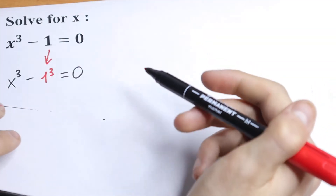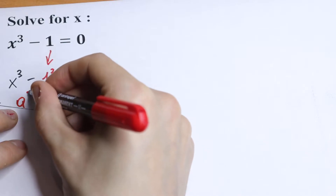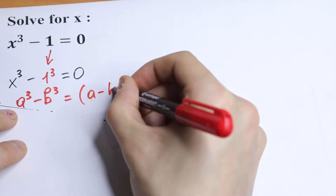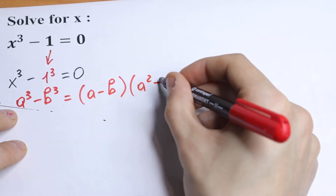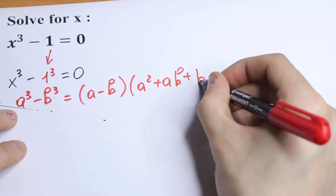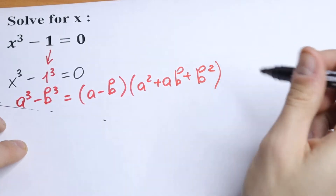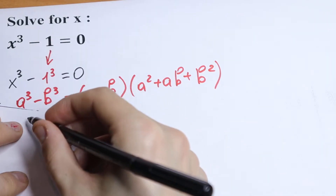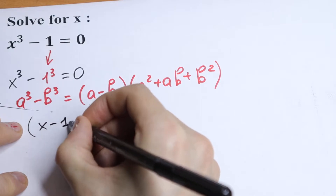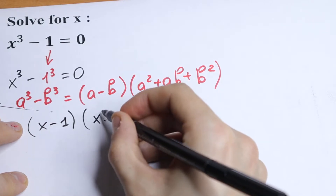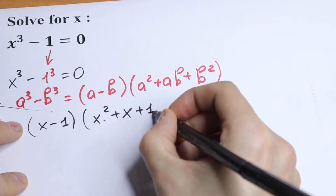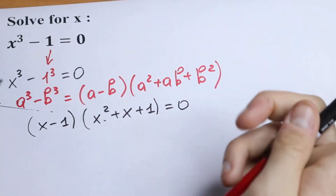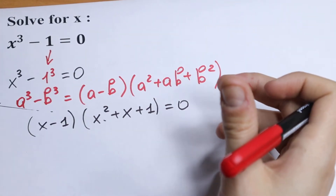We can use the formula for the difference of cubes: a cubed minus b cubed equals (a minus b) times (a squared plus ab plus b squared). Applying this with a equal to x and b equal to 1, we get (x minus 1) times (x squared plus x plus 1) equals 0.